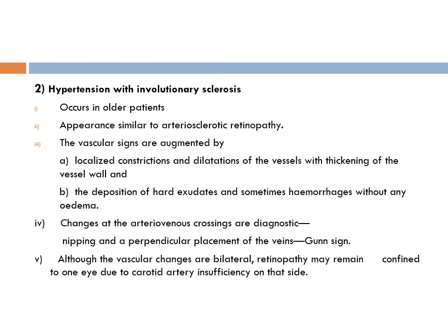The second category is hypertension with involutionary sclerosis — the majority of patients, suffering from essential hypertension for a long period, above age 40. Because these are older patients, their arterioles are already affected by atherosclerosis, so the changes overlap with both arteriosclerosis and hypertension.